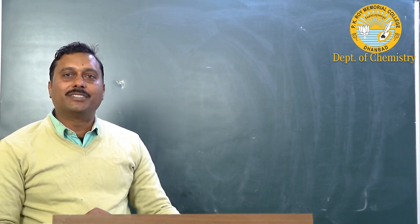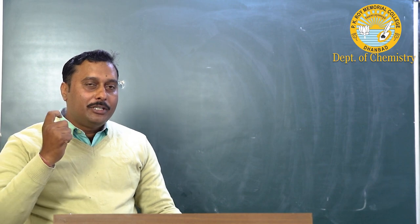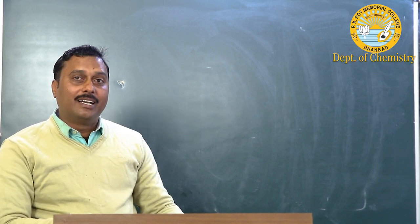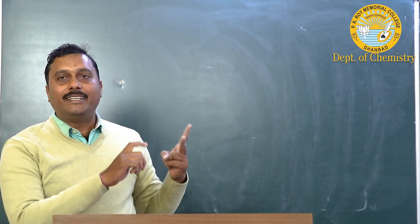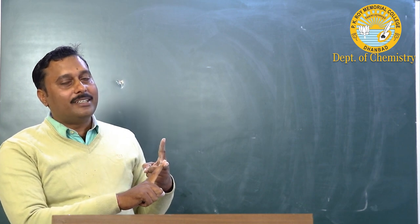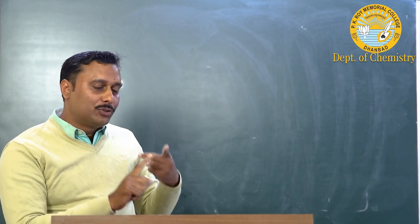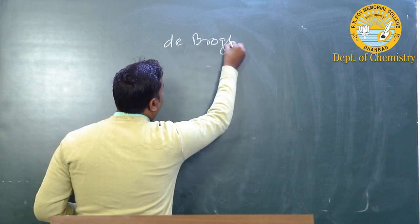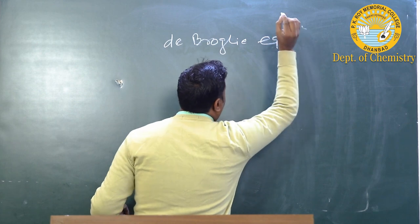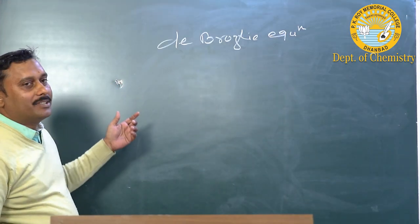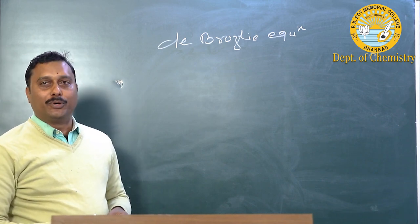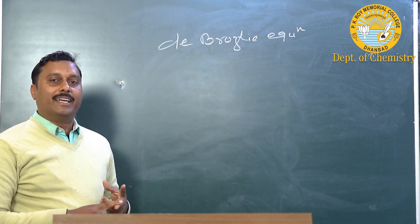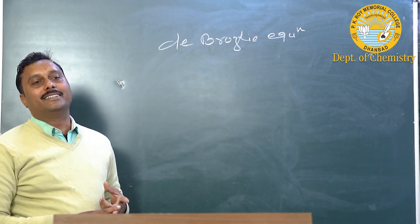Today we are going to discuss the de Broglie equation. Before entering the topic, I would like to remind you that Einstein in 1905 told that light has dual character. Dual character means light acts as a wave as well as a material particle.